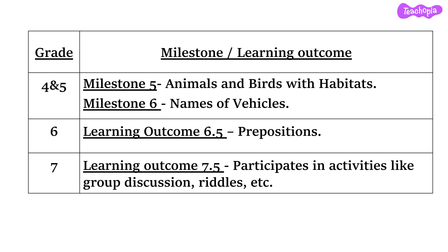The milestones and learning outcomes we will cover in this module are Milestone 5, Animals and Birds with Habitats, and Milestone 6, Names of Vehicles, for Grade 4 and 5. For Grade 6, we will cover prepositions from Learning Outcome 6.5. For Grade 7, we will look at Learning Outcome 7.5, which is participating in activities like group discussion, riddles, etc. Please note these are used as examples for the language tool to create simple questions.